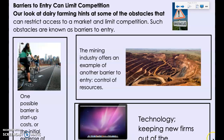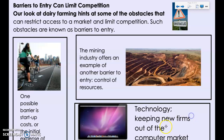Another barrier to entry is technology. If there is a need for specialized technology or training, that might make it difficult to enter the market. The computer industry is a great example — manufacturing computers requires advanced technology and very specialized knowledge that takes significant education or training. A third barrier is control of resources. If an existing mining company already controls the best deposits of iron, copper, or another mineral, it's going to be very hard for a new firm to enter and compete in that market.